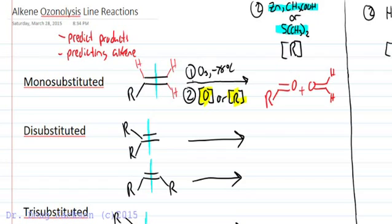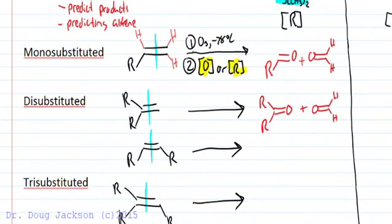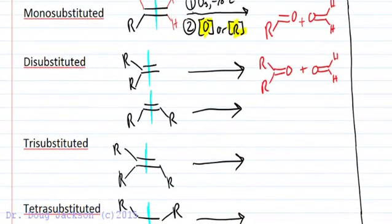We do this for each one, whether it's disubstituted. Of course the R groups could be different from one another but for this example they're the same. We just keep everything lined up the same, we just slide them apart. So if there's a methylene CH2 at the end of the alkene we're going to get a formaldehyde as one of the products and a ketone as the other, however we could also get two aldehydes.